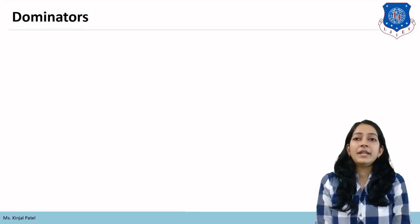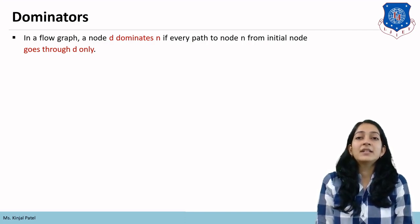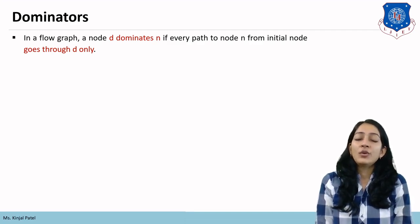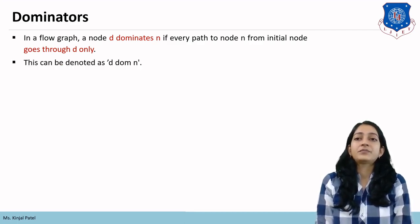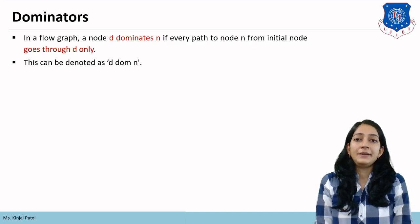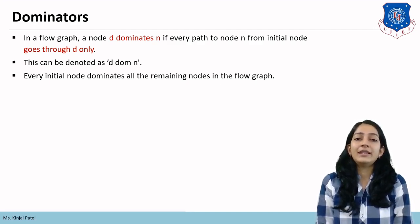The first concept is dominators. In a flow graph, a node d dominates node n if every path to node n from the initial node goes through d only. We denote this as d dom n. Every initial node dominates all the remaining nodes in a flow graph, and every node dominates itself.